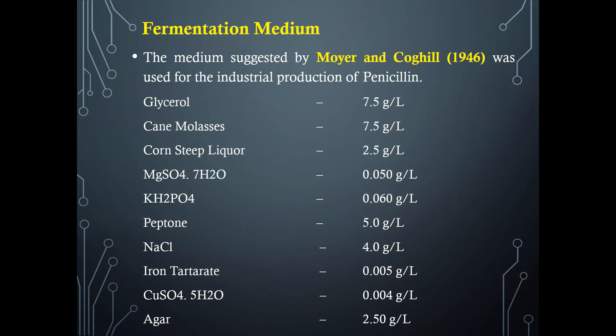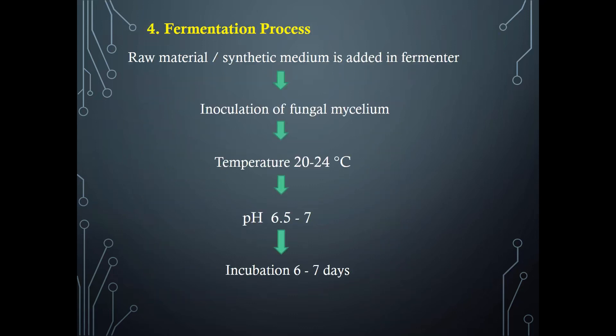The fourth step is the fermentation process. In the fermenter, the synthetic medium is added and fungal mycelium is inoculated. The temperature should be maintained at 20 to 24 degrees Celsius, and pH should be maintained around 6.5 to 7, which is a neutral pH. It is then incubated for six to seven days for the completion of the fermentation process.